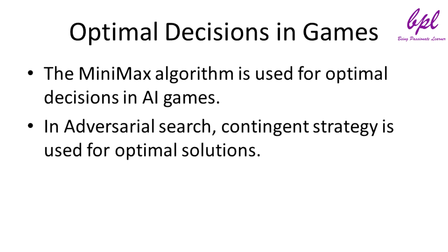Optimal decisions in games. In a normal search problem, the optimal solution would be a sequence of actions leading to a goal state or terminal state. In an adversarial search problem, we have to use a contingent strategy. The contingent strategy specifies max moves in the initial state, then max moves in the state resulting from every possible response by min, and so on.